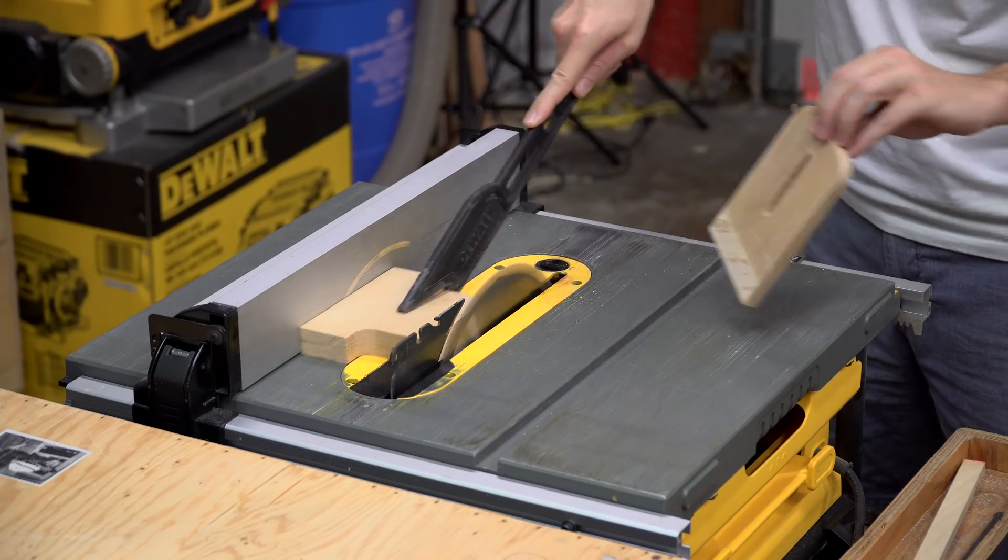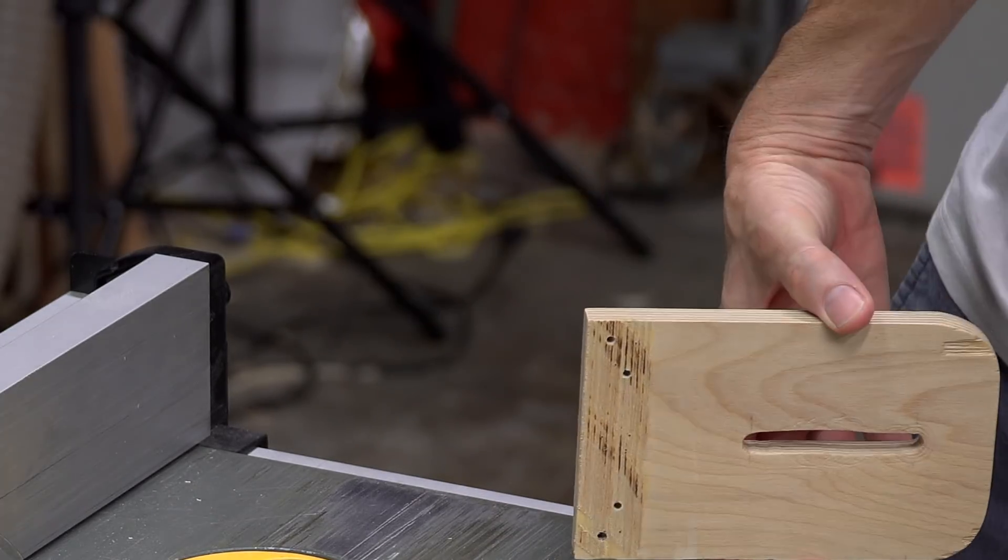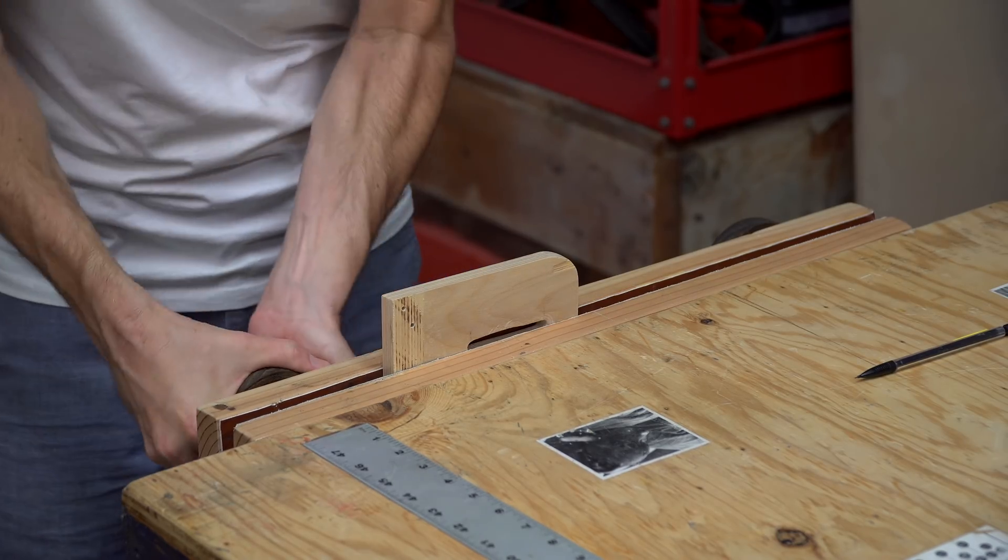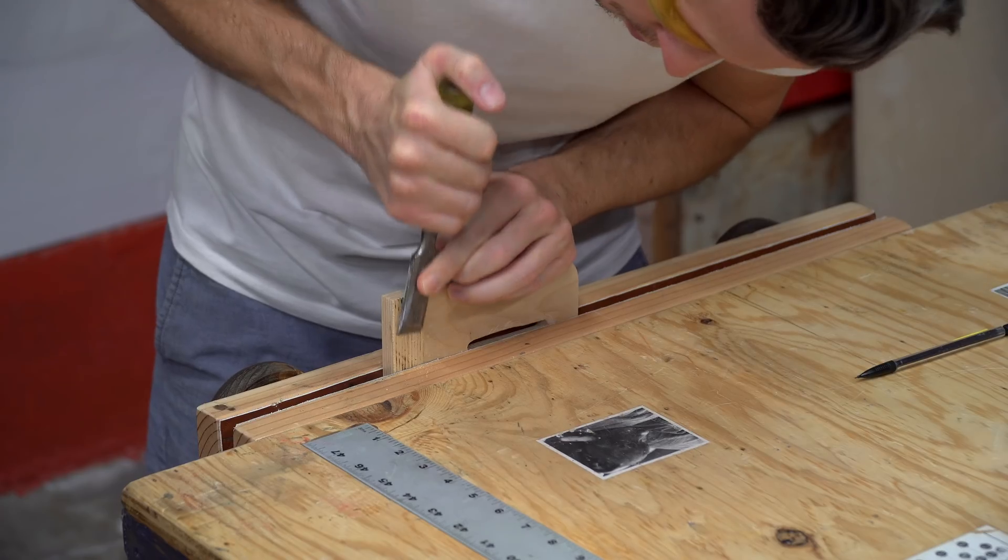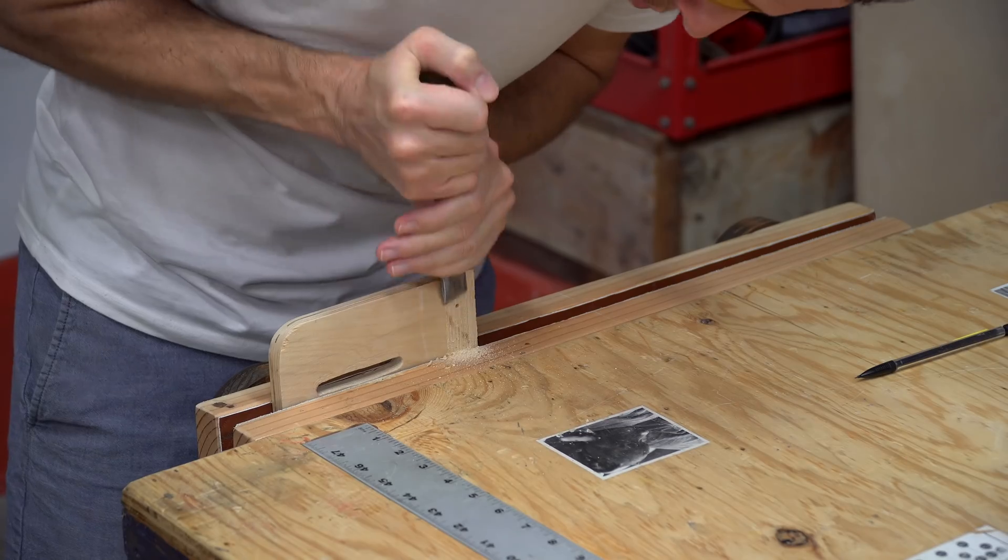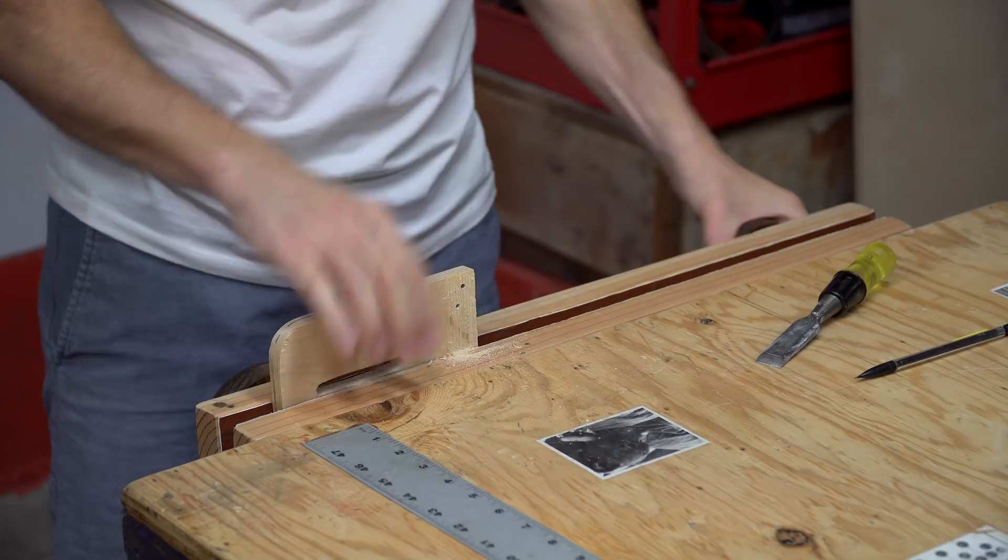I cut the piece just shy of the base to make sure I didn't go over. Because of that, I had to remove just a thin layer from the base afterwards. I used a chisel to get the large pieces and then finished it off on the disc sander.